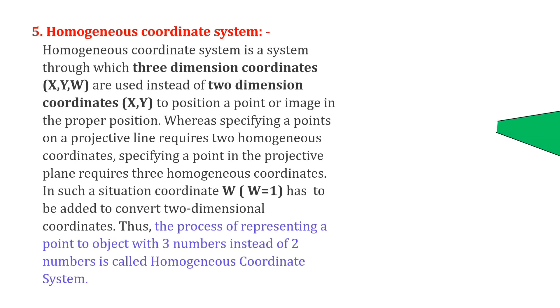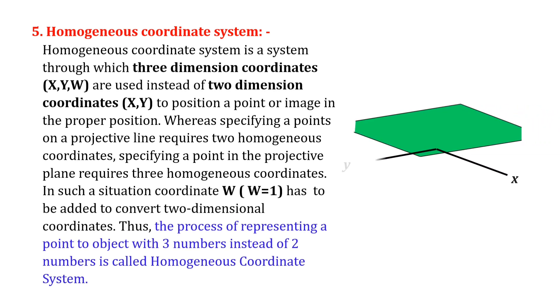Number five: homogeneous coordinate system. Homogeneous coordinate system is a system through which three-dimensional coordinates are used instead of two-dimensional coordinates to position a point or image in the proper position.